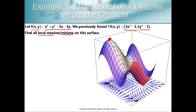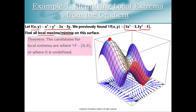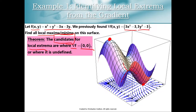So how do we identify the places where we might have a local max or min? We previously had a theorem that said that the candidates for local extrema are the places where the gradient vector is equal to (0, 0). Notice that I said candidates — we'll get some points that may be maxes or mins, but we have to do more investigation to figure out if they really do represent a max, a min, or neither.